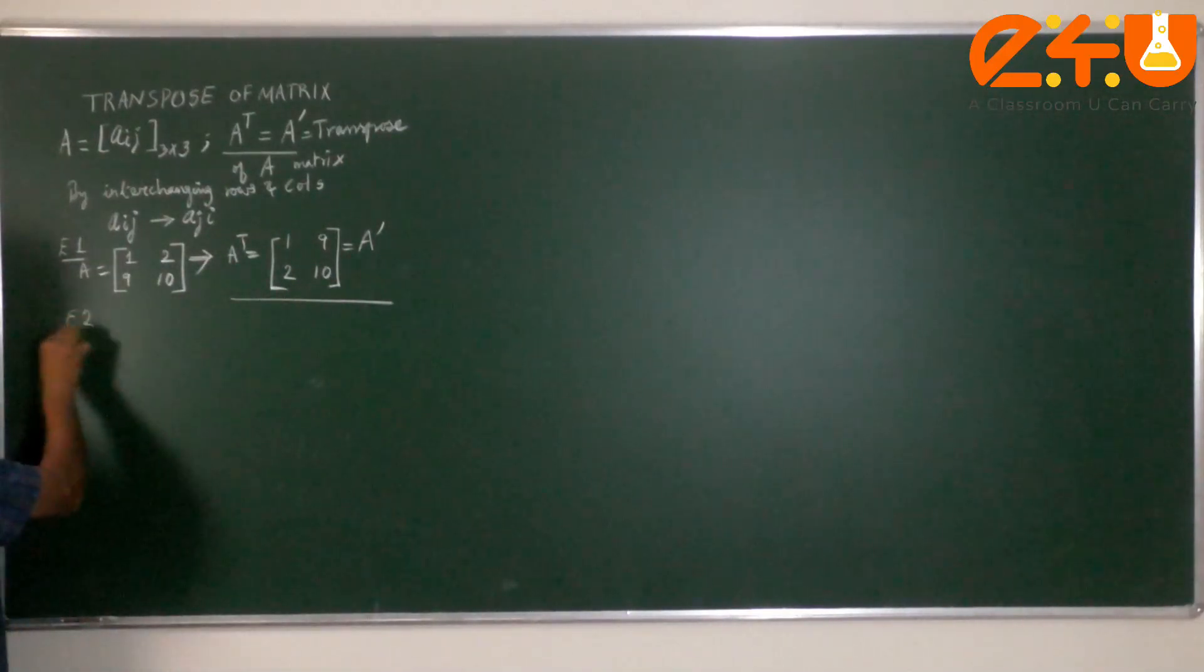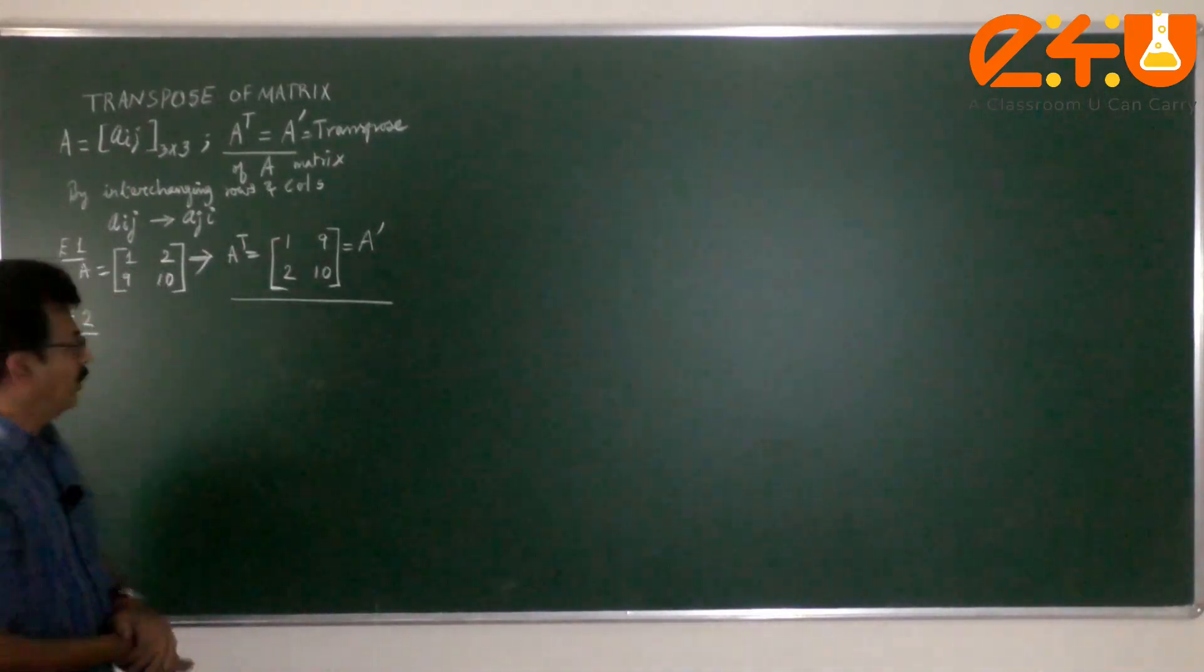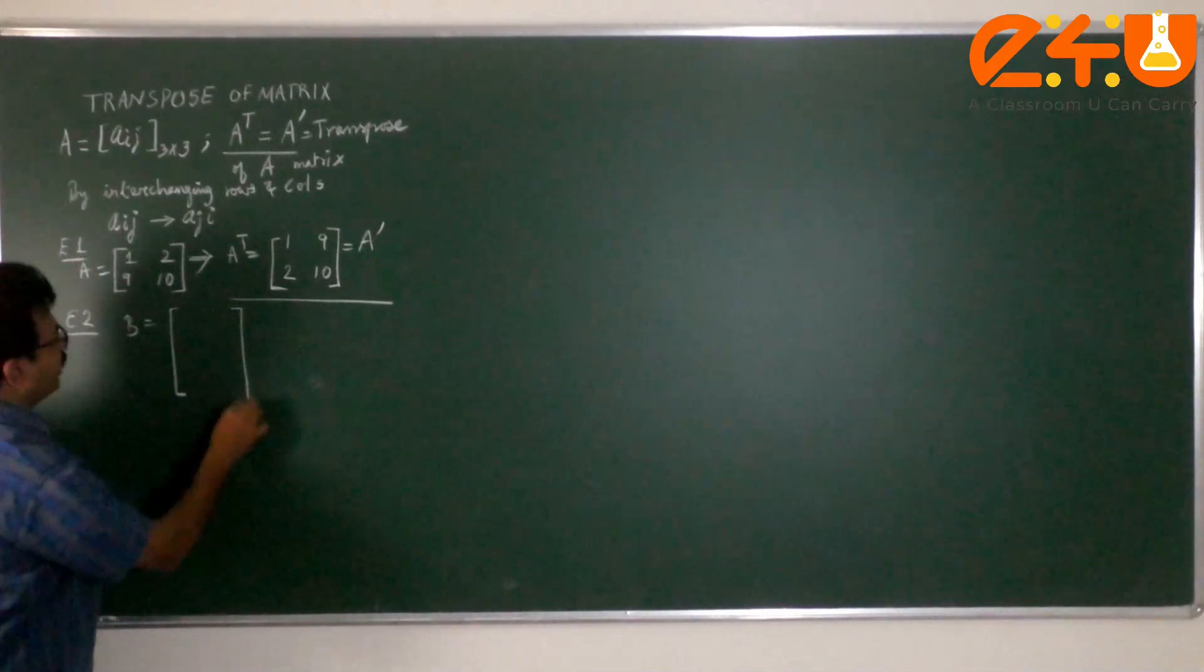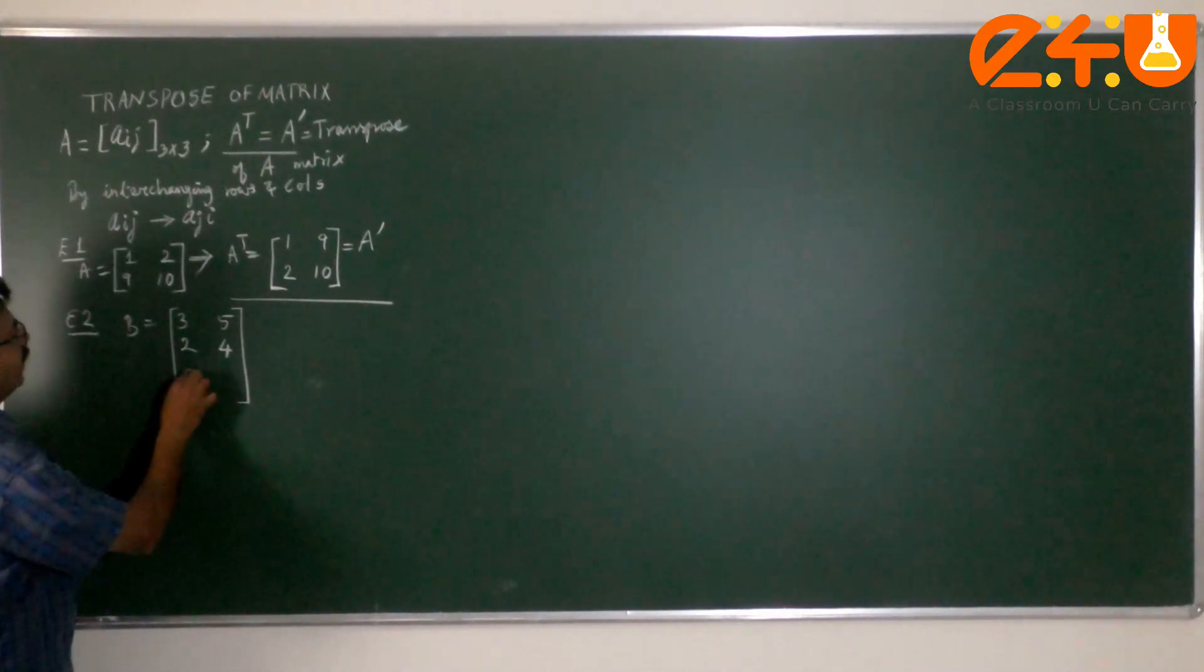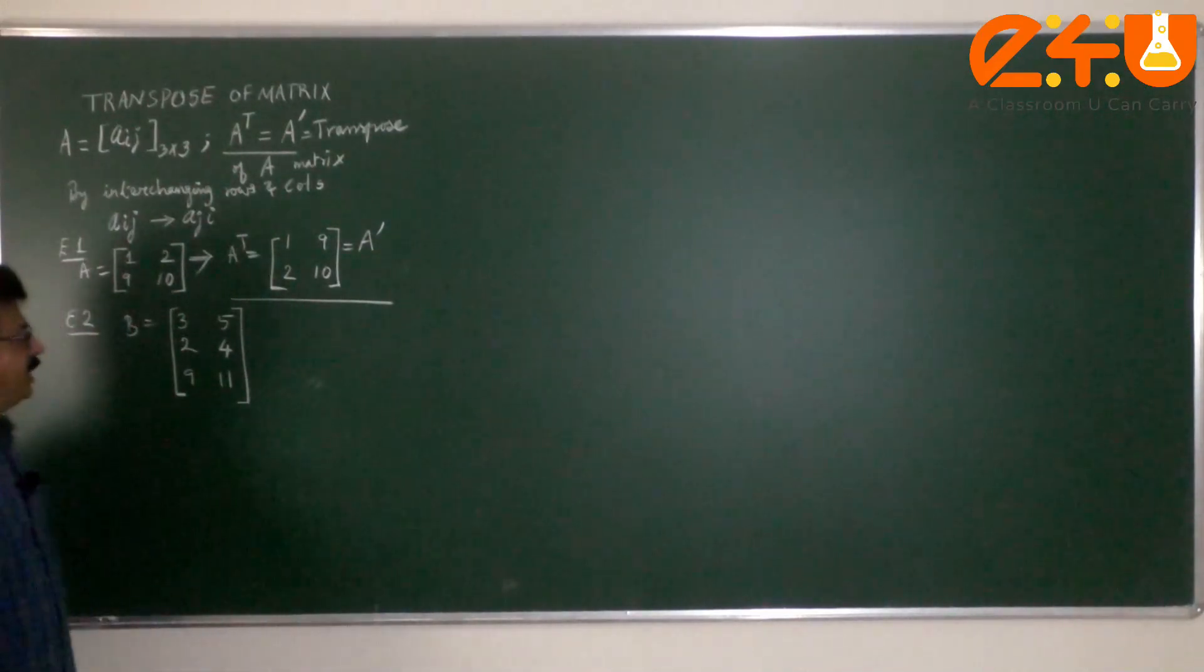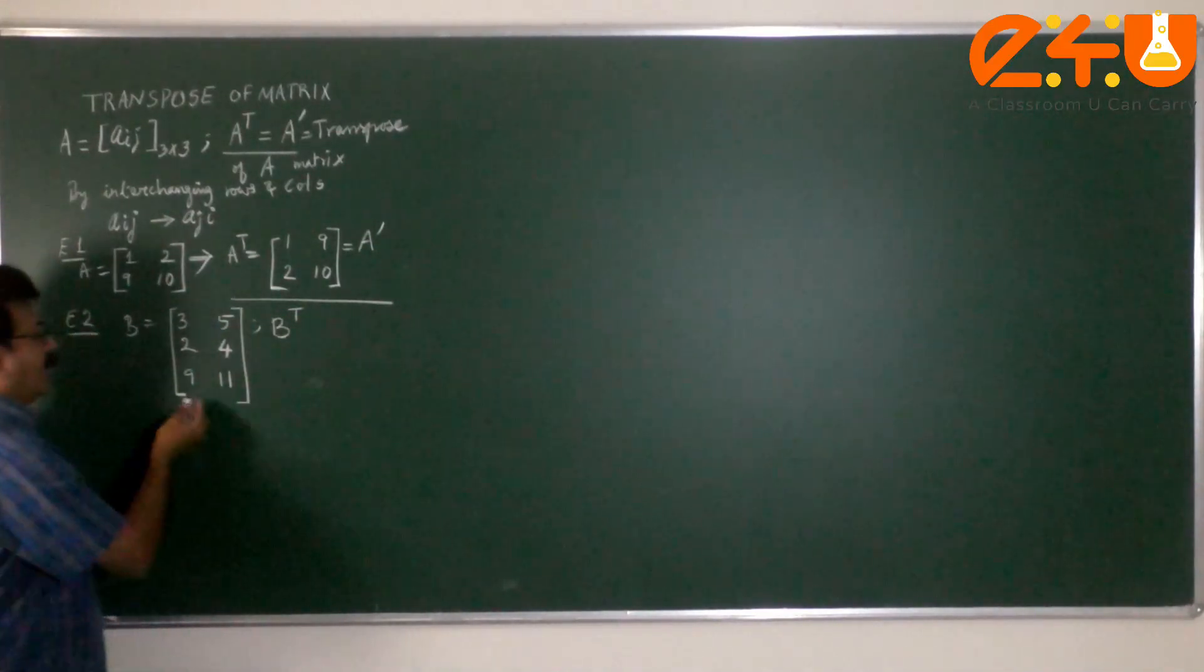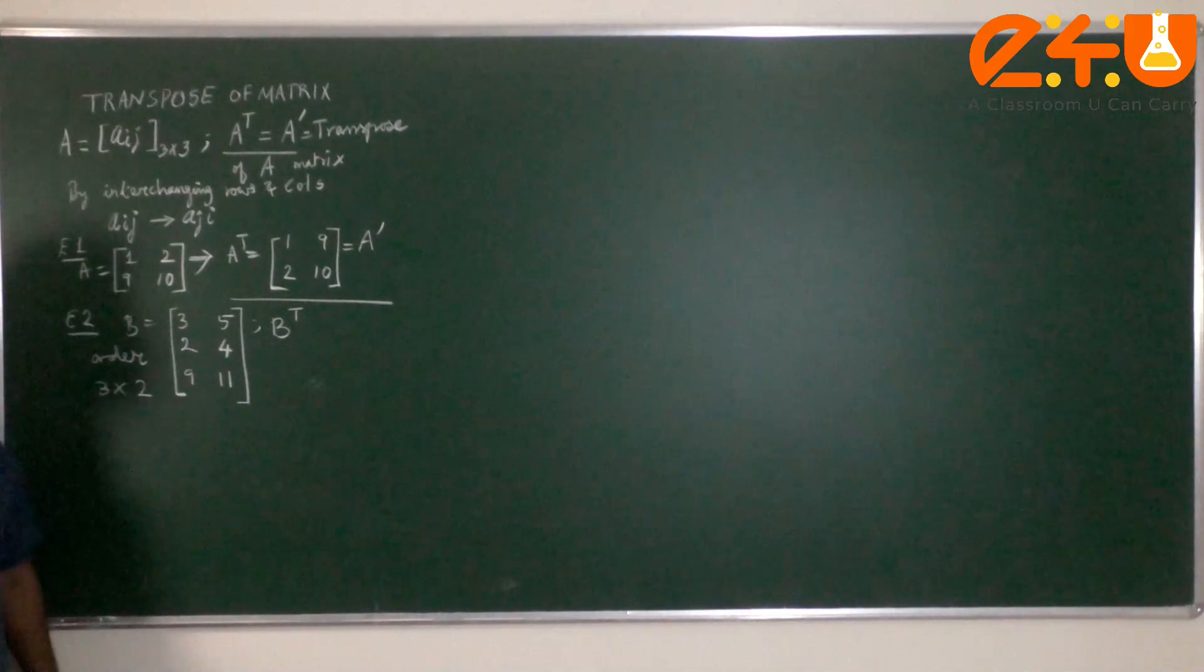Let me give another example which is not a square matrix. Any number of rows and columns I told you. Consider your matrix B. I am going to take a 3 by 2 matrix. First row, second row and third row. I have just written numbers randomly. What will be the B transpose?